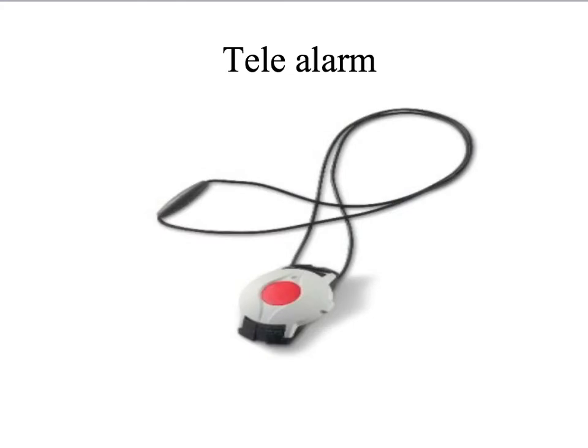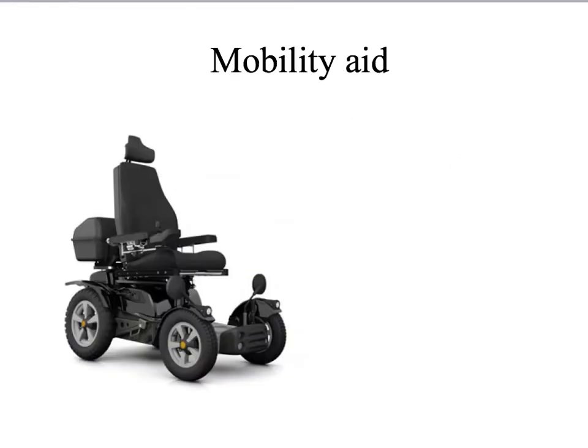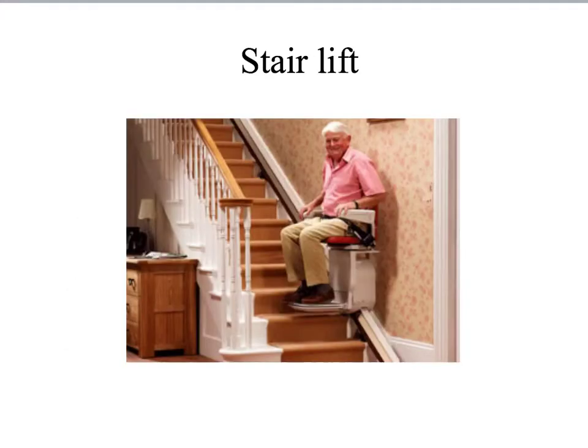Here's an example of technology used in social care: a personal alarm. The alarm is worn around the person's neck and features a big red button. If the person has an accident, a fall, or needs assistance, they can press the button and it activates an alarm remotely, so someone will come to that person's aid. Other examples of assistive technology include mobility aids and stairlifts.